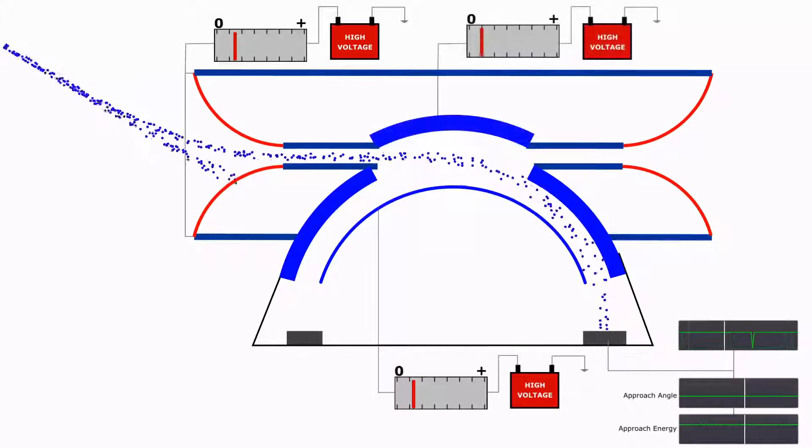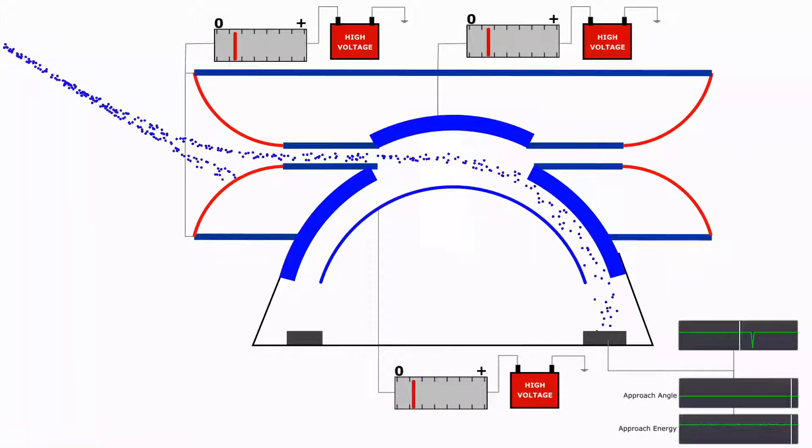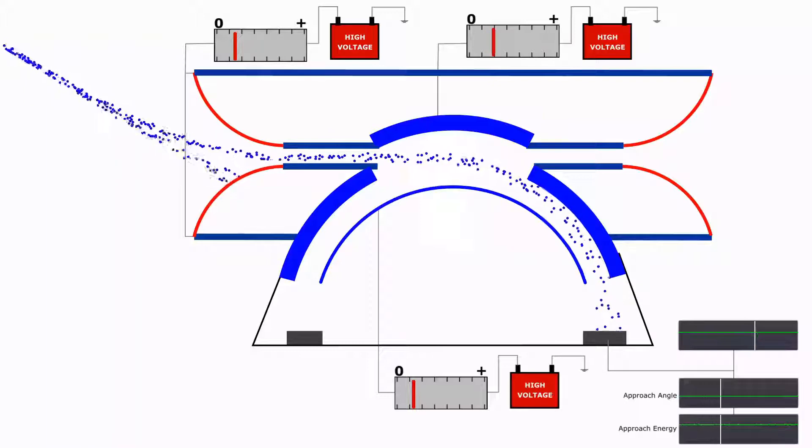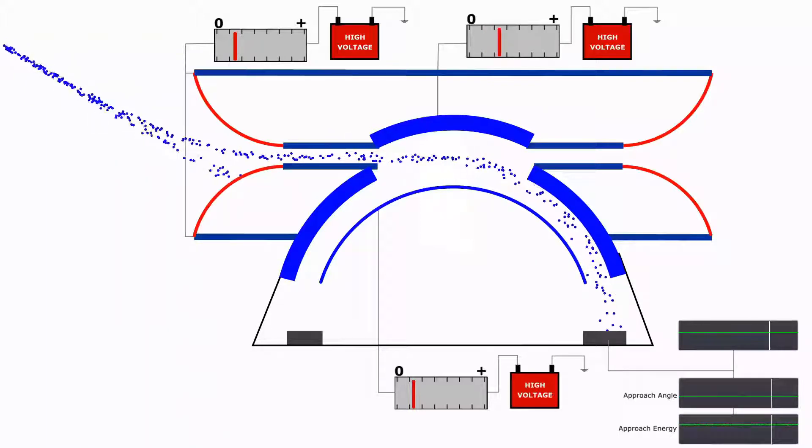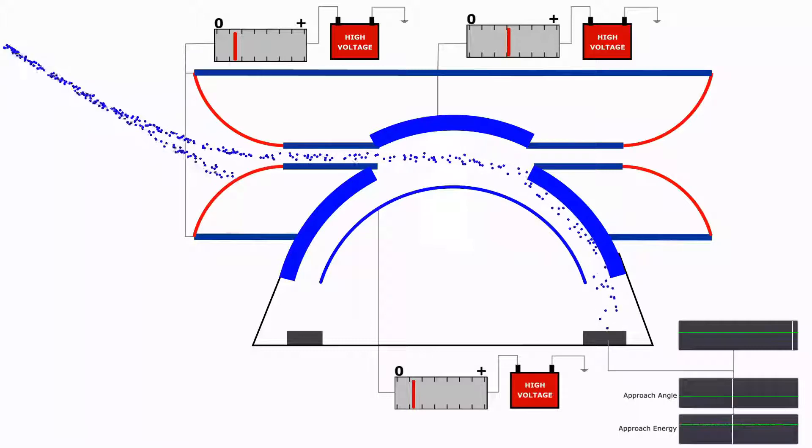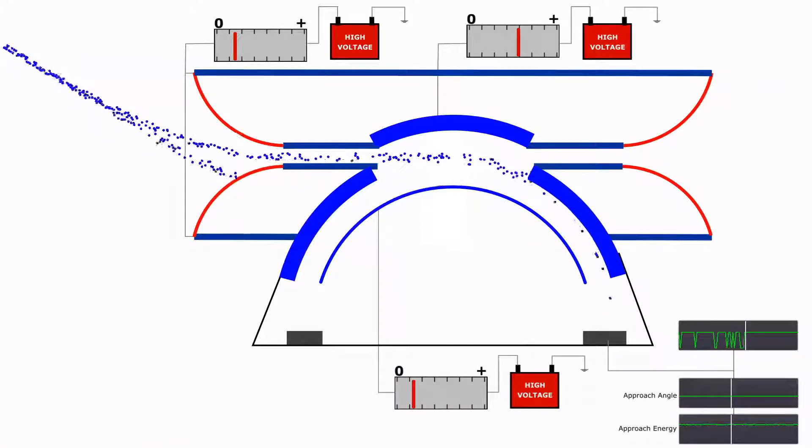By adding another deflector above the hole of the outer hemisphere and applying a voltage to it, we can physically adjust the region where the voltage applied to the inner hemisphere is effectively able to bend the incoming electron stream. This has the effect of limiting the amount of electrons that can be bent by the inner hemisphere. Thus, limiting the electron flow to the detector and avoiding saturating them.